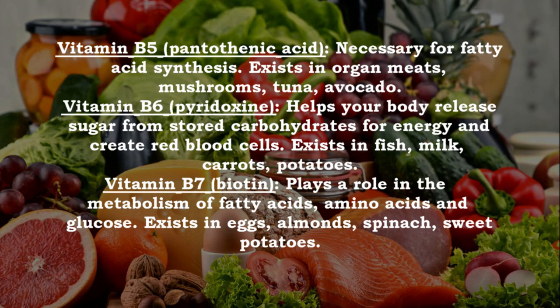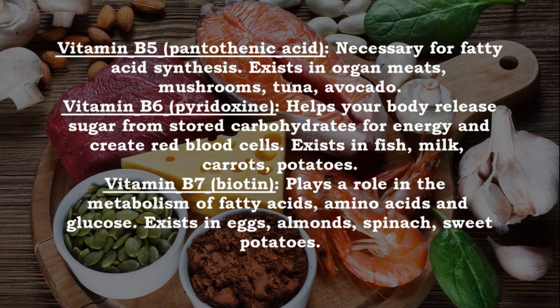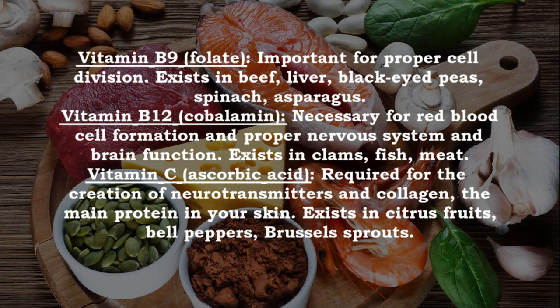Vitamin B5 (pantothenic acid) — necessary for fatty acid synthesis; found in organ meats, mushrooms, tuna, and avocado. Vitamin B6 (pyridoxine) — helps your body release sugar from stored carbohydrates for energy and create red blood cells; found in fish, milk, carrots, and potatoes. Vitamin B7 (biotin) — plays a role in the metabolism of fatty acids, amino acids, and glucose; found in eggs, almonds, spinach, and sweet potatoes.